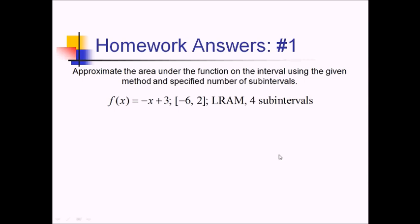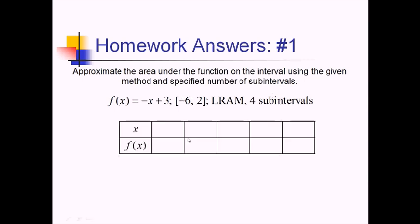Let's set up a table first. Since I'm doing four subintervals from negative 6 to 2, I'm going to start with negative 6 and go by 2's. So I've got negative 6, negative 4, negative 2, 0, and 2. Those are the x values. Let me calculate the y values that go with those now using my negative x plus 3 function.